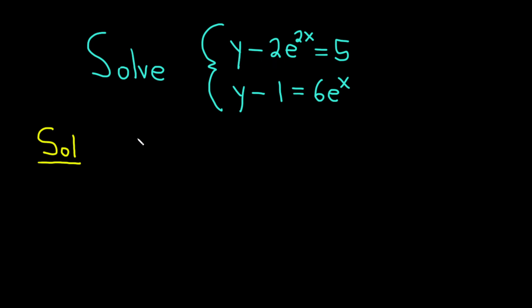Basically, that means we just switch the signs. So instead of y, we have minus y. Instead of minus 2e to the 2x, we have plus 2e to the 2x. And instead of 5, we have a minus 5.